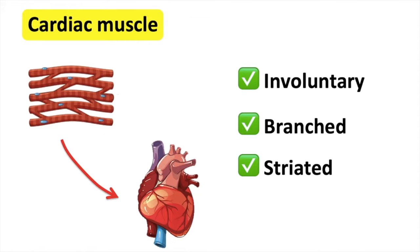As you can see, they have striations which are lines. Cardiac muscles also have either one or two nuclei on each fiber.